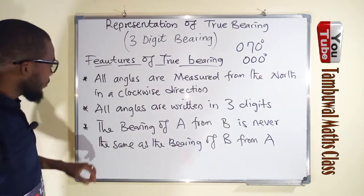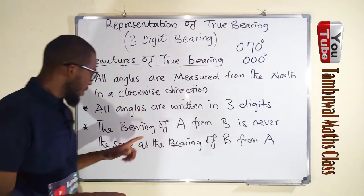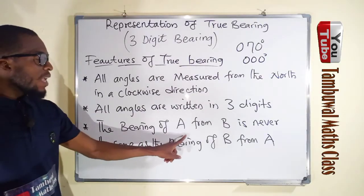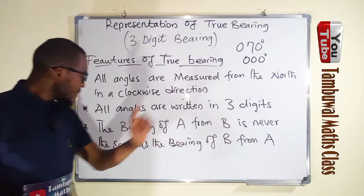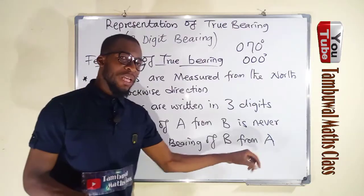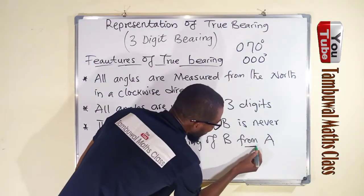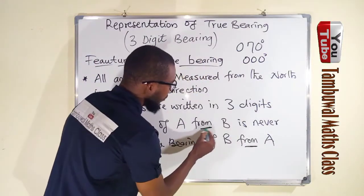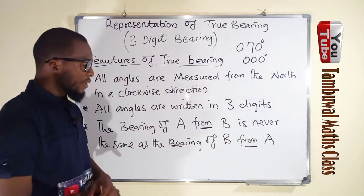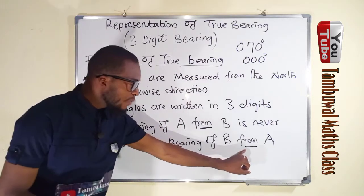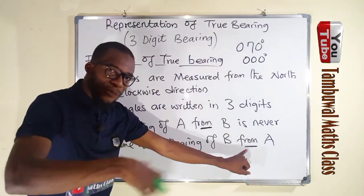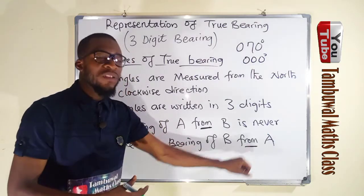And the last one, which is also very much significant. The bearing of A from B is never the same as the bearing of B from A. And this word here is very important: from. You can see it here. I will illustrate this in just a moment. This word from specifies where exactly the angle is measured.